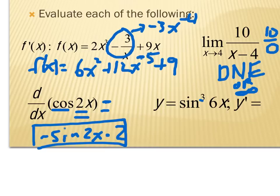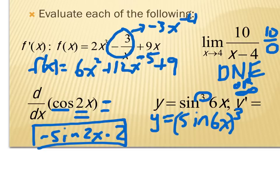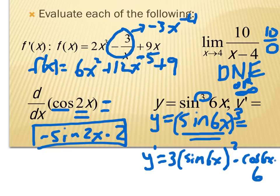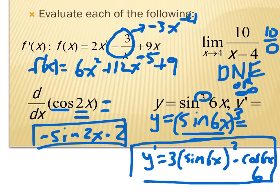The last problem has the exponent on the inside. Before deriving, rewrite it with the exponent on the outside: sine of 6x in parentheses to the third power. Now find y prime by recognizing the outside and inside functions — and the inside itself has its own inside and outside. Derive the outside: 3 times sine(6x) squared, leave the inside alone, then multiply by the derivative of the inside: cosine(6x) times 6.